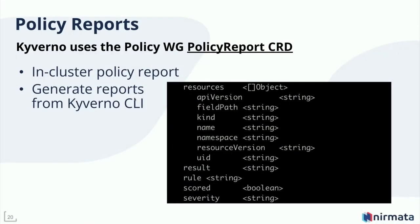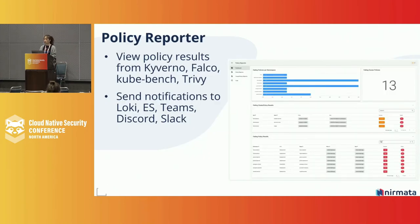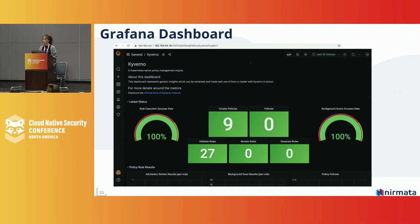You can view the policy report with kubectl commands, but we also provide Policy Reporter as another tool which helps you view policy results generated from Kyverno, Falco, kube-bench, or Trivy. Policy Reporter can also be configured to send notifications to different targets like Loki, Elasticsearch, Teams, Discord, Slack, and so on. Here is a UI of Policy Reporter giving you a centralized view of all policy violations. We also have a Grafana dashboard — if configured, it shows the security score of your cluster.